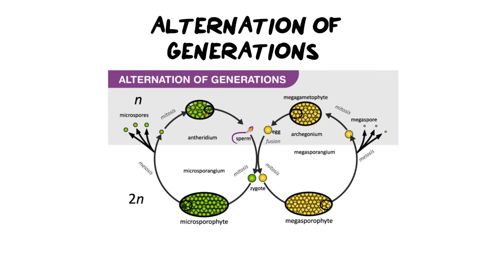Next we need to look at alternation of generations. Essentially what that means is plants exist within two generations depending on what they're doing — are they reproducing and making more of themselves, or are they adults that are growing and living? There are some very important words we need to be familiar with before I go into this explanation, so I just want to recap and cover them.